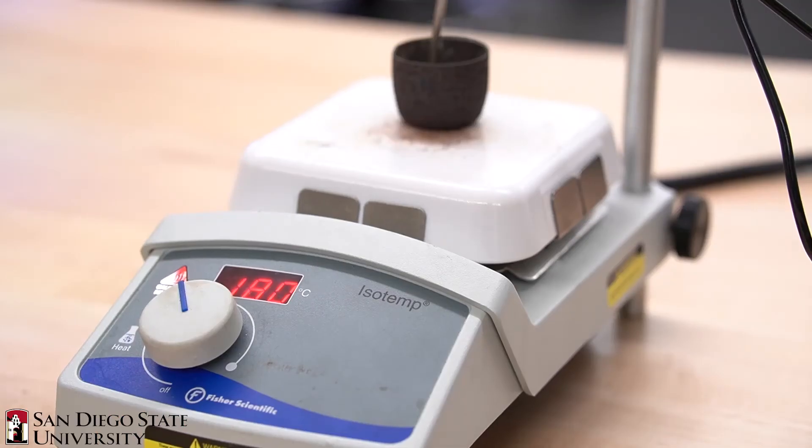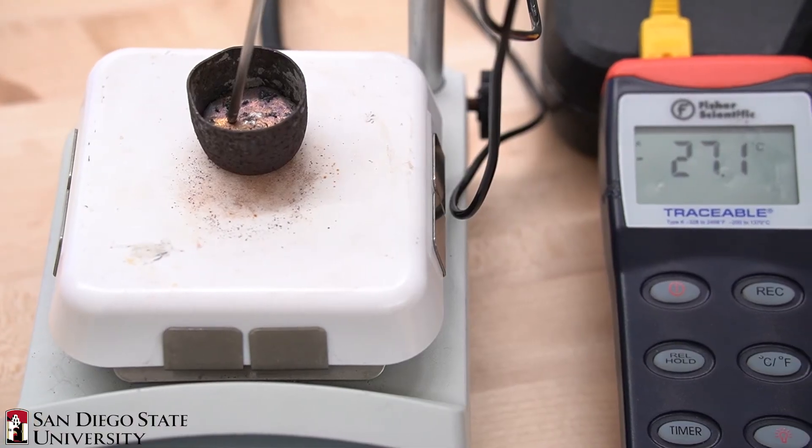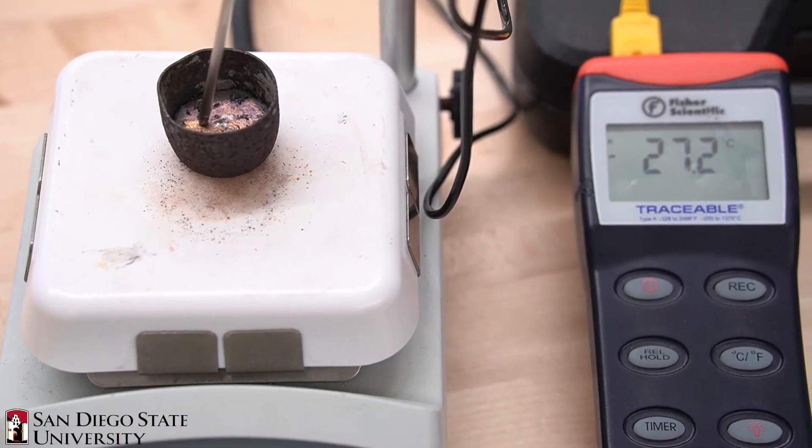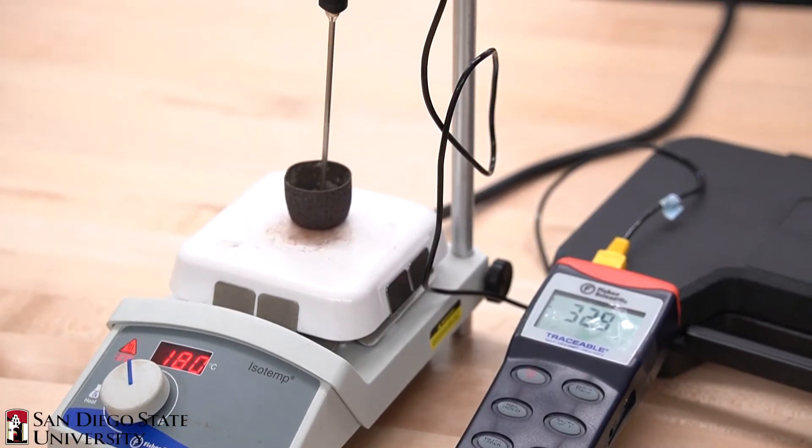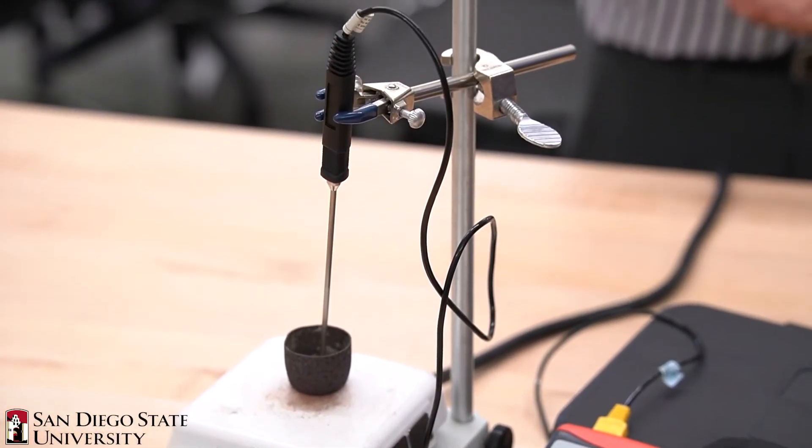The temperatures recorded during the cooling are used to construct the phase diagram for the binary alloy and determine the eutectic point. This lab deals with molten metals and use of safety goggles is required for the duration of the lab.